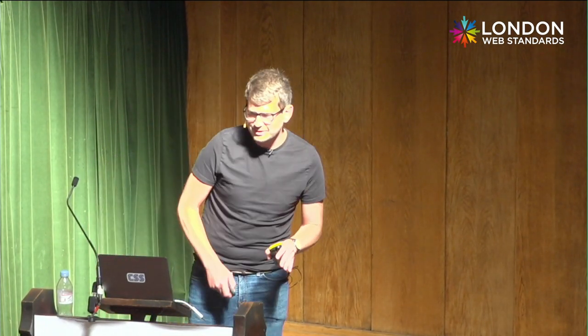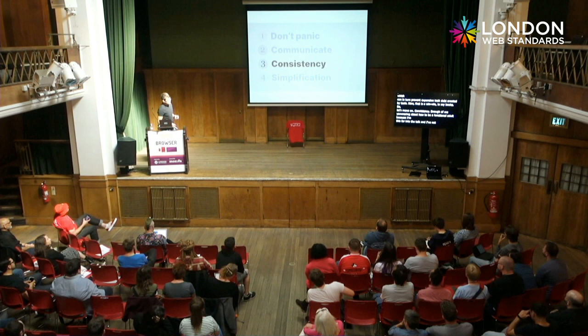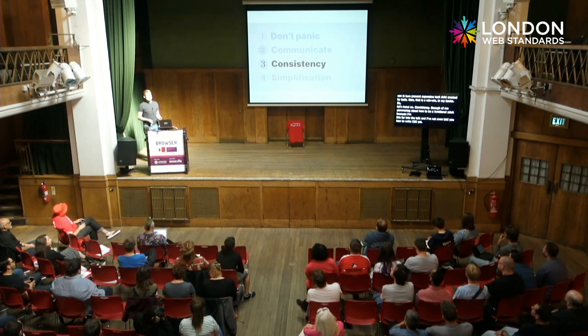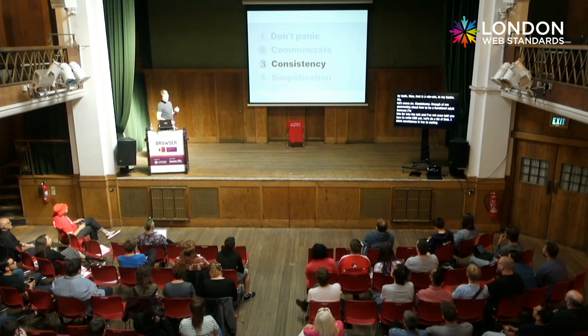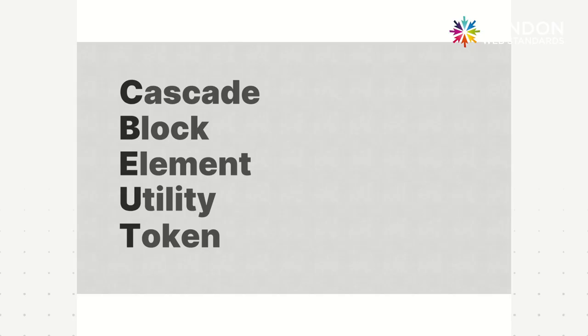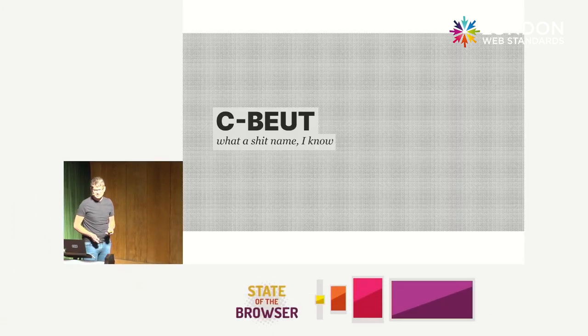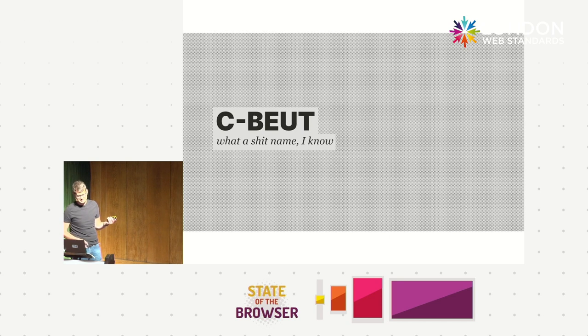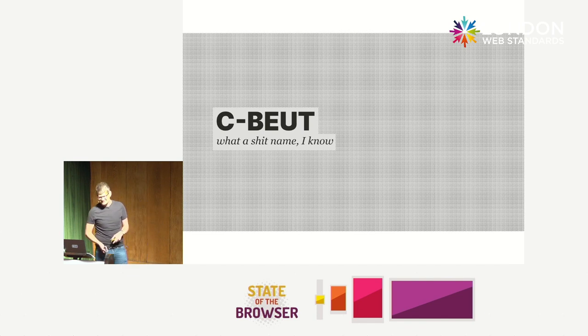Consistency. I think consistency is key to scaling CSS. Really, this is what over-abstractions are trying to do — they just go a bit too far. The methodology I use for clients is called CBUTE, which stands for Cascade, Block, Element, Utility, Token. CBUTE is admittedly a terrible name, but it fits right in with the rest of the crap names in our industry.